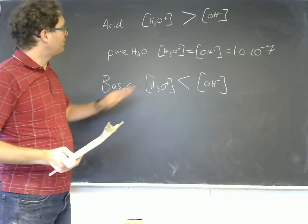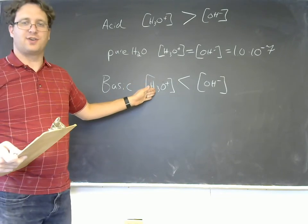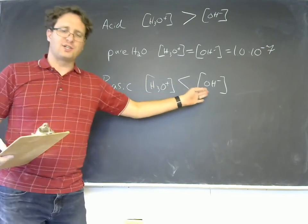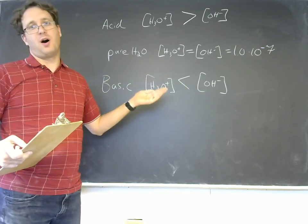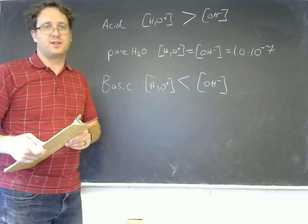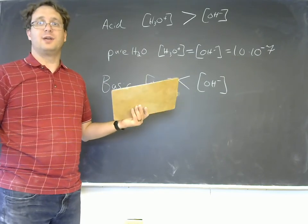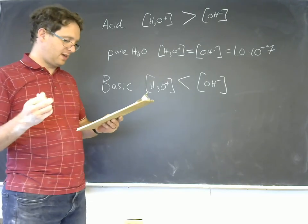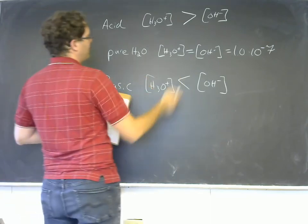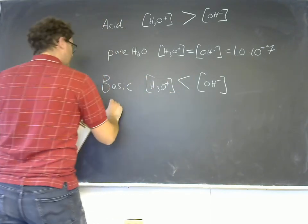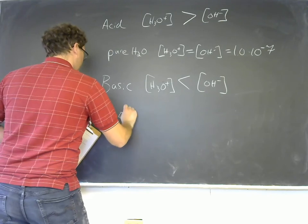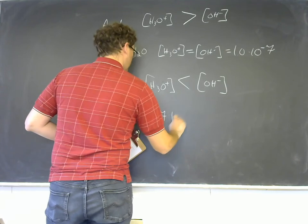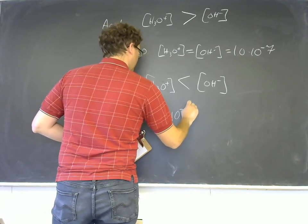If I change the H3O plus concentration, either by adding or removing H3O plus, the OH minus concentration will respond. It will change in response to that because of the KW equilibrium expression. They're linked. We can always find one based on the other. So let's say I have a basic solution with H3O plus equal to 2.7 times 10 to the negative 9th.